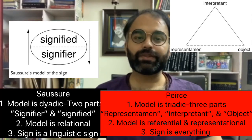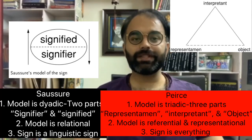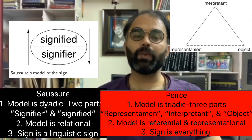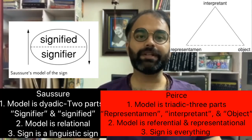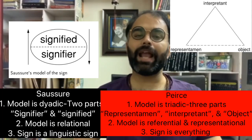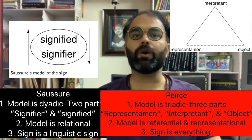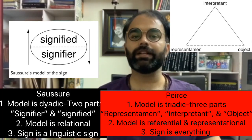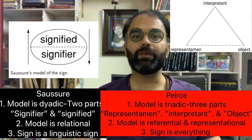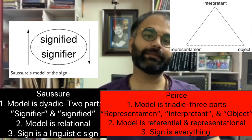In Saussure's model, sign is a linguistic sign, whereas in Peirce's model, sign can be anything — any form of words, images, sounds, flavors, feelings, acts, or objects.